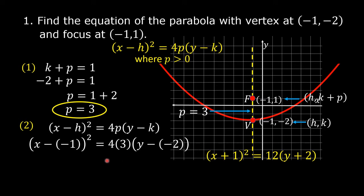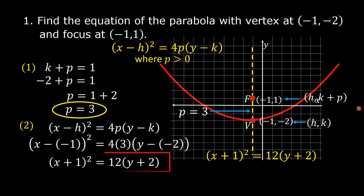We have (x minus negative 1) squared equals 4 times 3 times (y minus negative 2). Simplifying, we get (x plus 1) squared equals 12 times (y plus 2). This is the equation of the parabola with vertex at (negative 1, negative 2) and focus at (negative 1, 1).